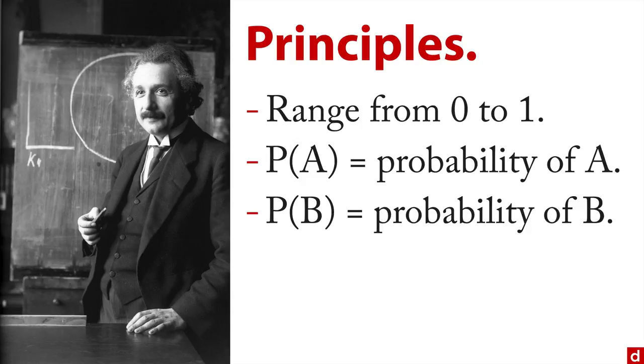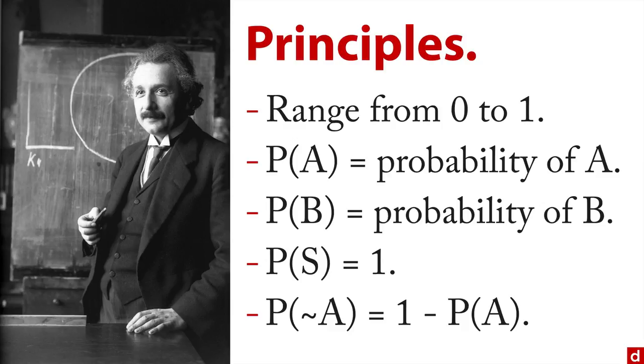When you take all probabilities together, you get what's called the probability space, which we denote as S. It all adds up to one because you've covered 100% of the possibilities. You can also talk about the complement. The tilde is used to say the probability of not A equals one minus the probability of A, because those have to add up.